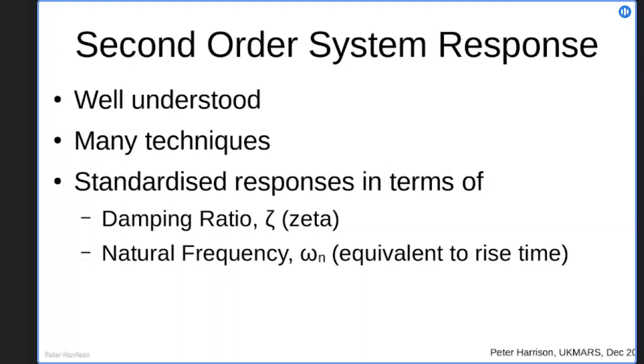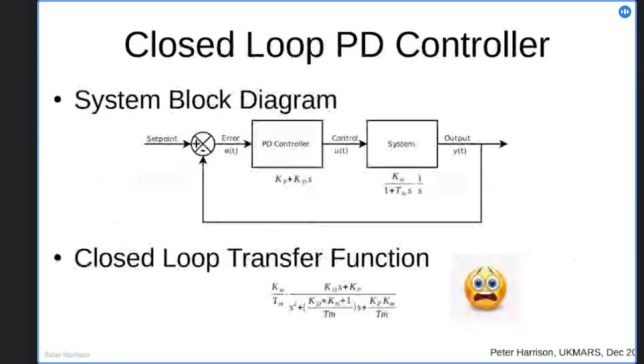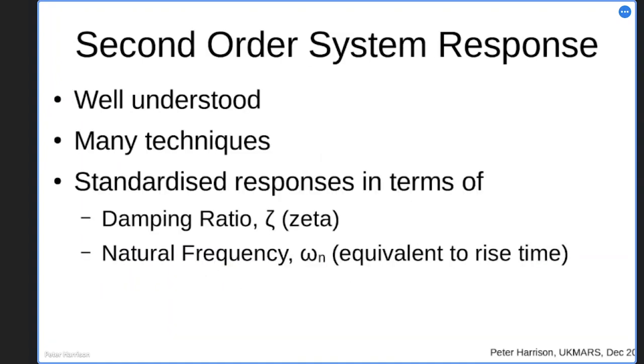Well, it turns out that these kinds of systems where you're feeding back a first order system and an integrator, which is how we get the distance out of the speed, are generically called second order systems. And these are very well understood. In fact, if you go and pick up any book on control systems, I pretty much guarantee that three quarters of it is going to be about handling second order systems. Because even where you have much more complicated systems, people love to try and simplify them down into second order systems. Now, these systems have two defining characteristics. One is the damping ratio, zeta. And the other is the natural frequency.